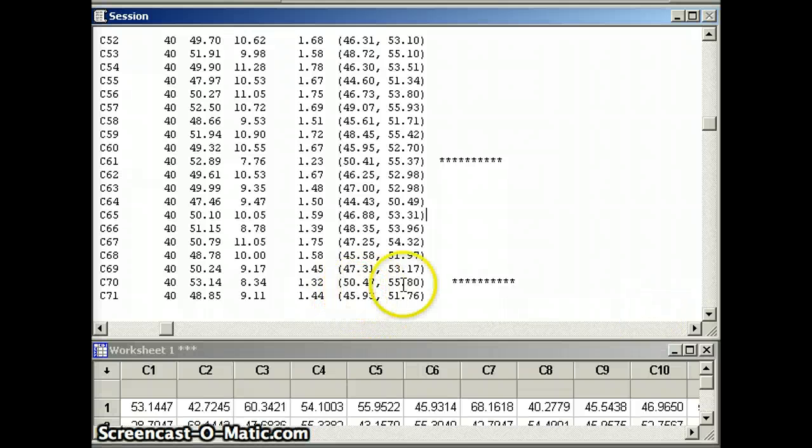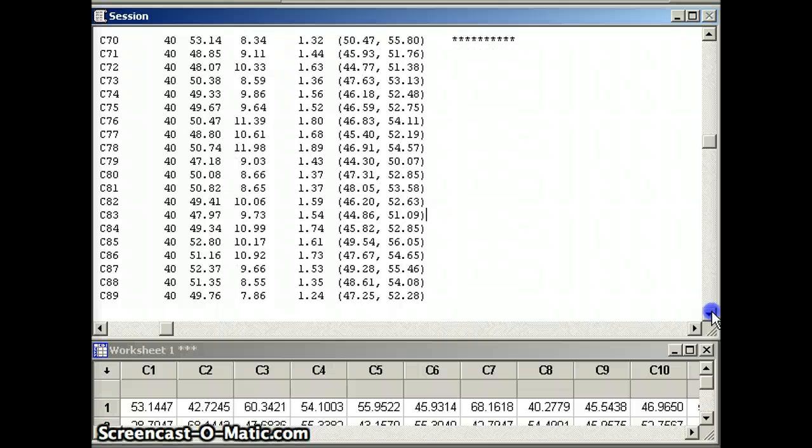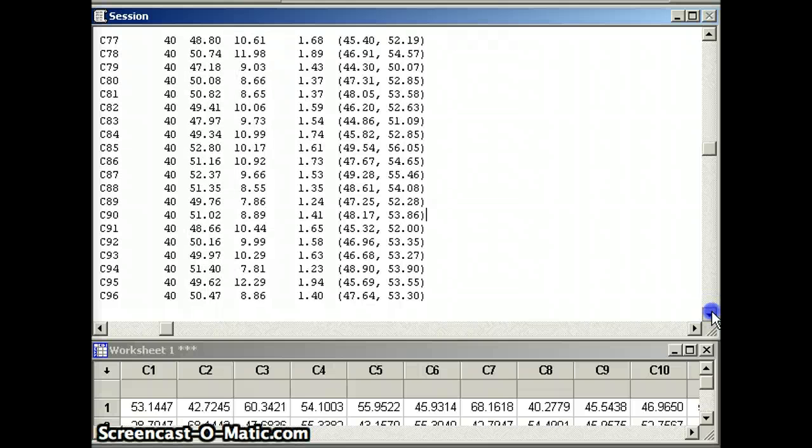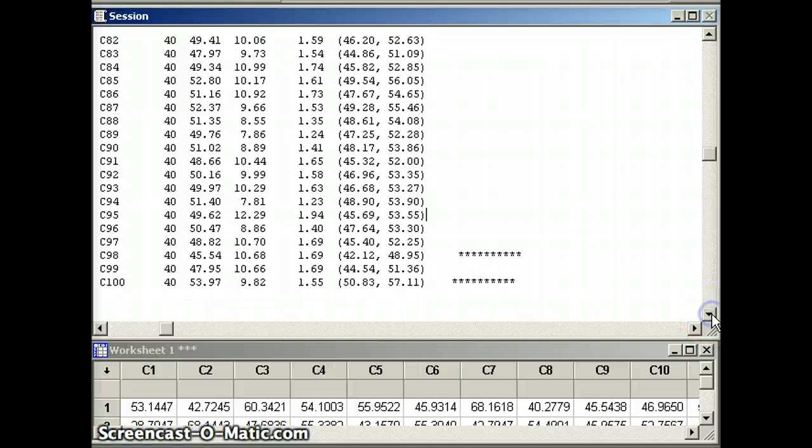One that starts at 50.47, ends at 55.8, does not capture 50. And notice here's the first time that it was a little bit too low. We go from 42.12 to 48.95. That also doesn't capture 50. And 50.83 to 57.11. So we had six bad ones. So we had 94 out of 100 good ones. We expected 95, but if you flip a coin 10 times you expect to get five heads, but you certainly could get six or you could get four. So getting 94 good ones out of 100 when you expect 95 certainly seems reasonable to me.